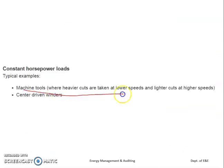Examples of constant power loads include machine tools, where heavier cuts are taken at lower speeds and lighter cuts are done at higher speeds. Another example is center-driven winders, as discussed.